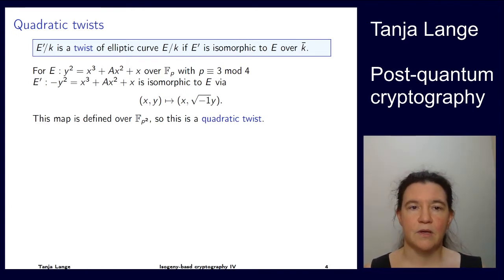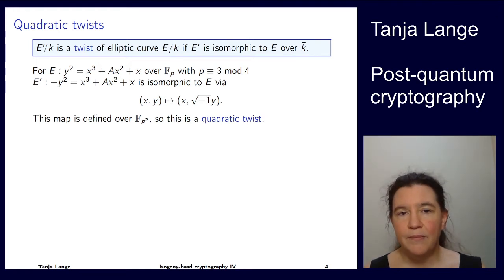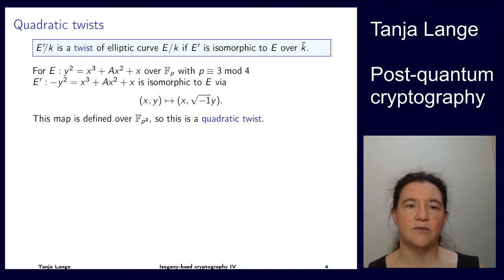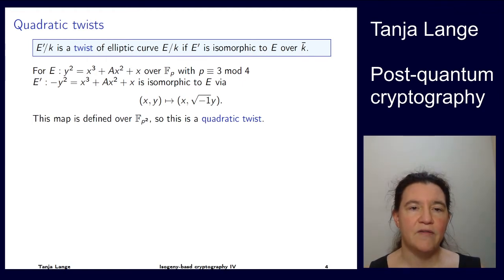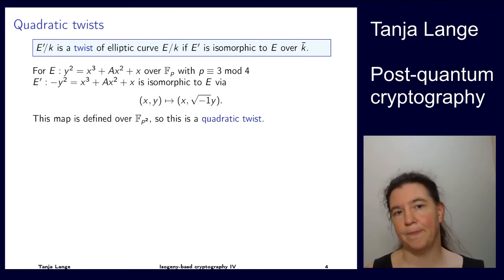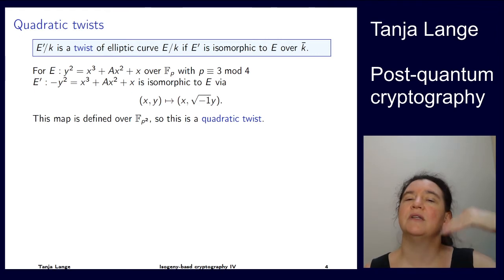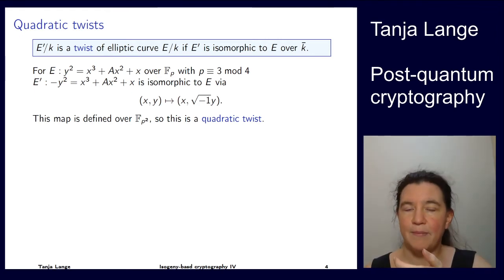Let's look at these curves. We have some E given in Montgomery form, and then E prime where the only change is a minus sign in front of y². If you have a valid point on E and want to map it to a valid point on E prime, you map xy to (x, √(−1)·y). I'm specifying this curve is over F_p where p ≡ 3 mod 4, which means √(−1) is not defined over F_p but over F_{p²}. So this map is only defined over a quadratic extension field — that's why we call such a twist a quadratic twist.